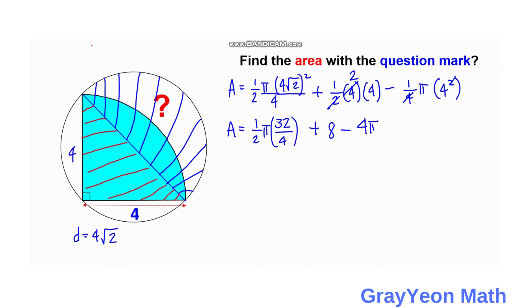So we have this becomes eight and this becomes four, so area is equal to four pi plus eight minus four pi. So we simply cancel this out, so area is equal to eight square units, and that is our answer.